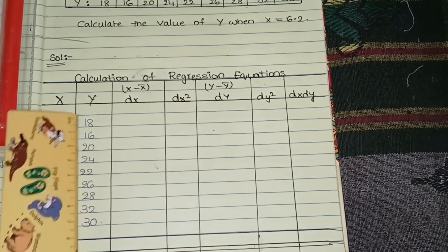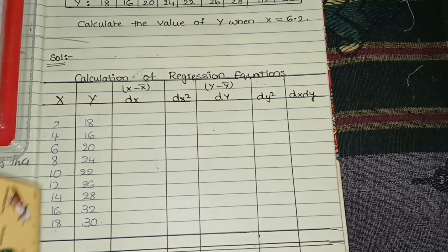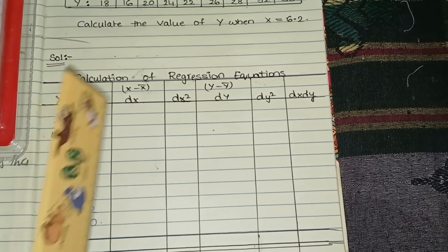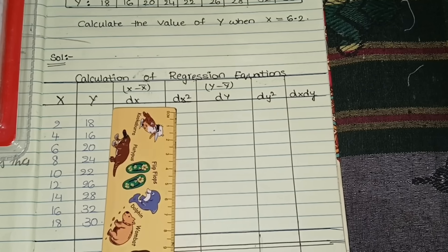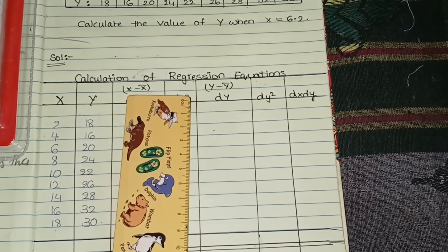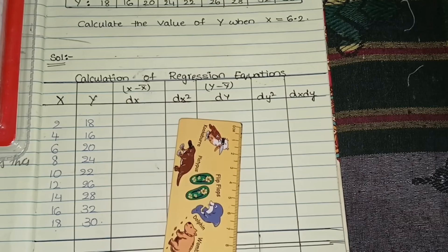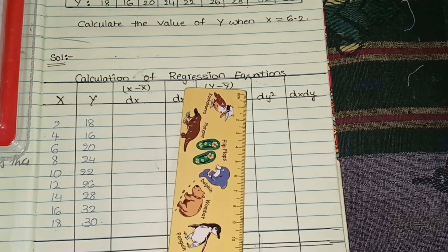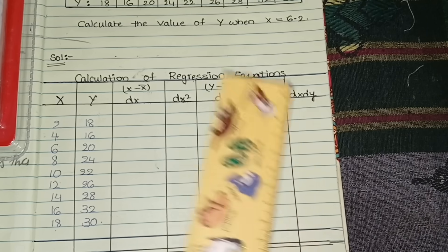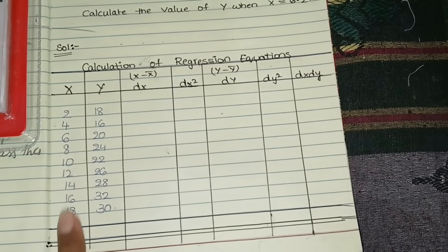The table consists of: x values from the question, y values from the question, then columns for dx and dx², where dx is x minus x̄ (so we need to calculate the mean of x), dy means y minus ȳ (we need to calculate the mean of y), then dy², and finally dx·dy.